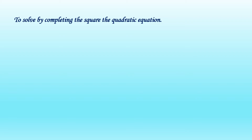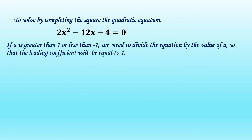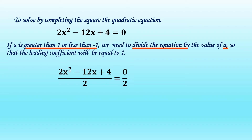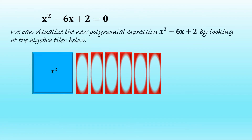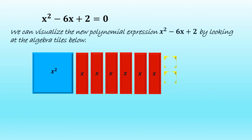To solve by completing the square the quadratic equation 2x squared minus 12x plus 4 equal to 0, if a is greater than 1 or less than 1, we need to divide the equation by the value of a so that the leading coefficient will be equal to 1. So we divide 2x squared minus 12x plus 4 equal to 0 by 2, and it becomes x squared minus 6x plus 2 equal to 0. We can visualize the new polynomial expression x squared minus 6x plus 2: 1 blue tile for x squared, 6 red rectangular tiles for negative 6x, and 2 yellow tiles for positive 2.